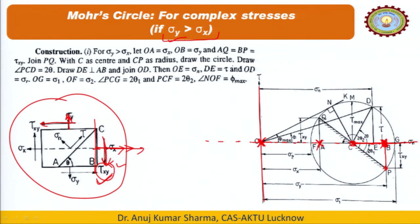Now we connect these two points. In the previous biaxial case tau was zero, so those points lay on the horizontal line. But in the complex stress case with shear stress, the line is inclined depending on the values. After connecting the two points, where this line intersects the x-axis gives the center. Using this distance as the radius, we draw the circle — that circle is the Mohr circle for complex stresses.